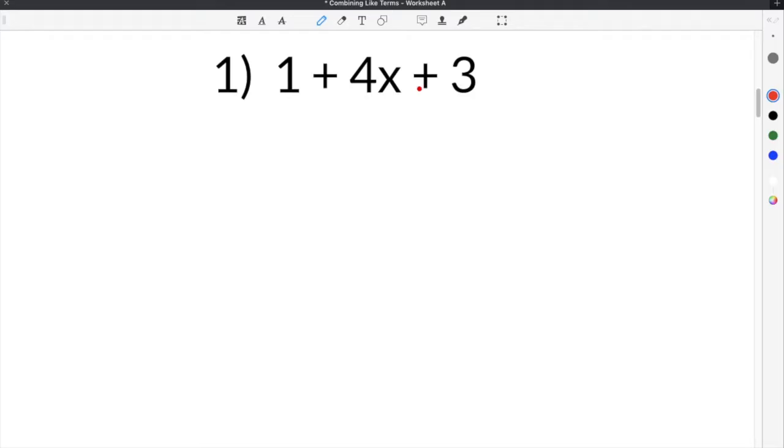Number 1 gives us 1 plus 4x plus 3. So remember a like term are any terms that have the same variable combination or if they are constants or numbers. So in this case, we have a 1 and we have a 3 in our expression and because they are constants, they can be combined together. And the second type of term we have is this 4x and this 4x has no other term with x's.